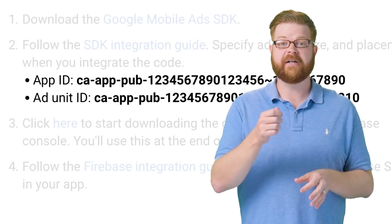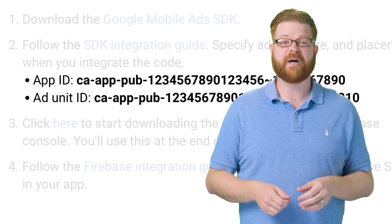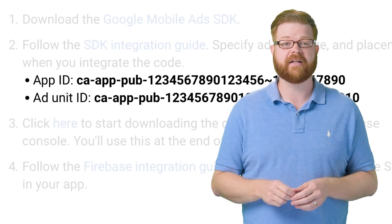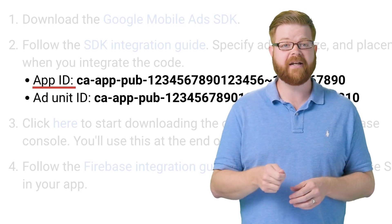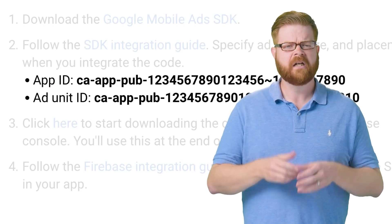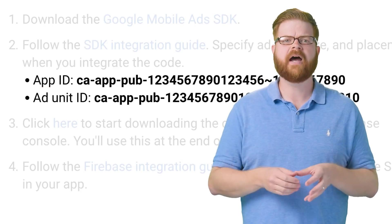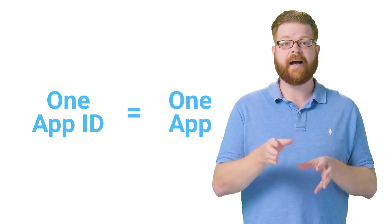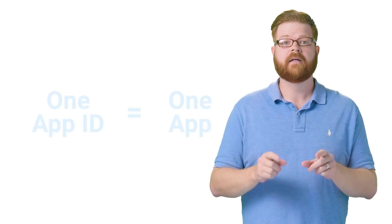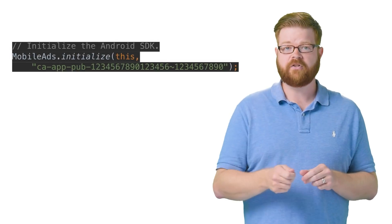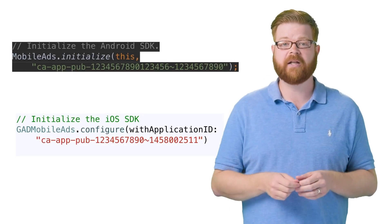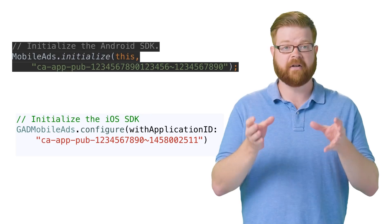When you register an app and create an ad unit in the AdMob UI, you get not one, but two ID values: an app ID and an ad unit ID. An app ID is a unique identifier for an app using AdMob. They're one-to-one. The value doesn't change, and its main use is in the call to initialize the mobile ads SDK when your app launches.